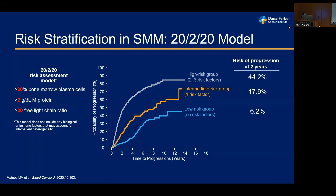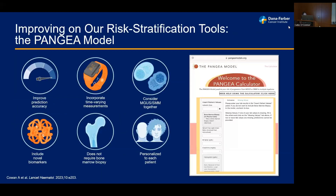From these groupings we see different risk profiles. The low-risk group has a risk of progression within the first two years of less than 6 or 7%. Among the higher-risk group, the chance of progression within the first two years can be as high as roughly 45 to 50%. However, we should always work towards improving our prediction accuracy and having a more personalized risk stratification for our patients.